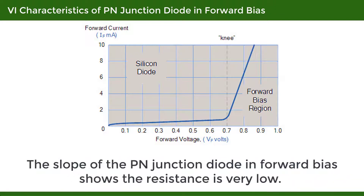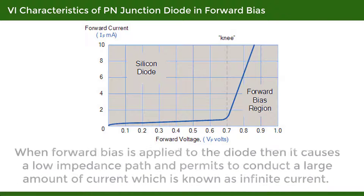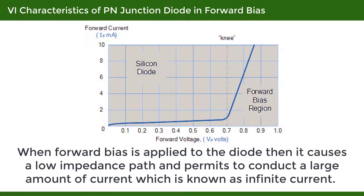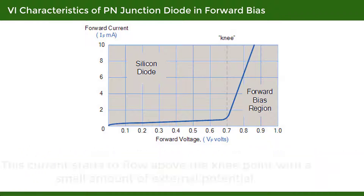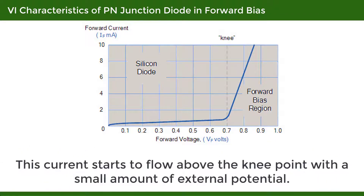The slope of the PN Junction Diode in Forward Bias shows the resistance is very low. When forward bias is applied to the diode, it causes a low impedance path and permits a large amount of current to conduct, which is known as infinite current. This current starts to flow above the knee point with a small amount of external potential.